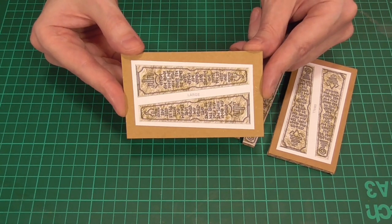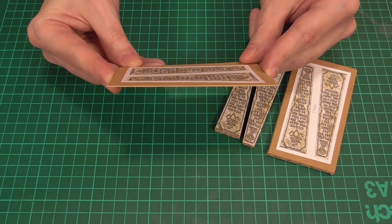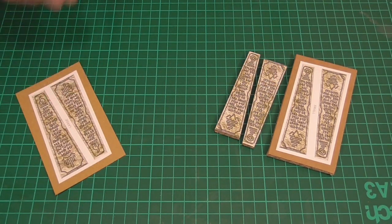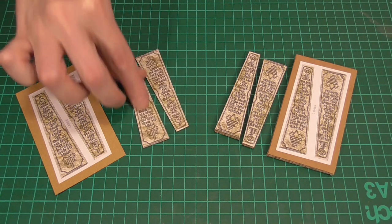Next we'll glue the two larger sides of the obelisk to some thin card and again we'll just cut those to size as well. There you go.